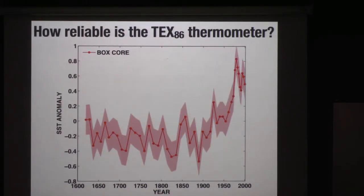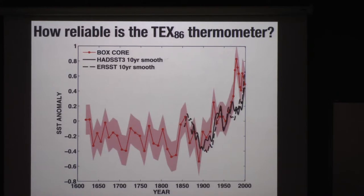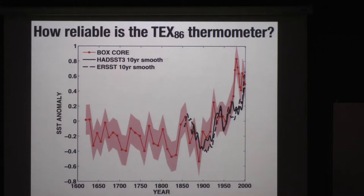How reliable do we think TEX86 is at recording that warming? Because I'm calibrating this proxy with a global calibration dataset, I can compare it to local temperature records that are essentially independent. Plotting a couple of gridded products on top — keeping in mind we don't actually have observations in the Gulf of Aden, so these are also interpolations — the good news is we see a similar change in temperature since about 1900, with maybe also evidence for warm conditions near 1850. It's not perfect, but it's pretty good for a marine sediment core. The relative change is about a little less than a degree in the last century, which gives us confidence that in those long-term relative changes, we're reconstructing the right values.